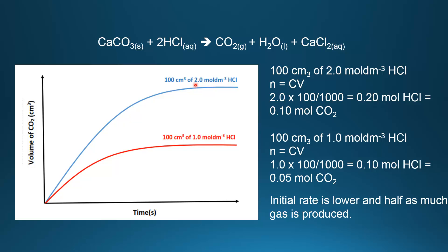Looking at the volume of gas produced, the blue curve produces about twice as much gas as the red curve. The reason is the number of moles. For the blue curve I get 0.10 moles of CO2, and for the red curve half as many moles, meaning half as much volume. So for this graph, the initial rate is lower due to the lower concentration, and half as much gas is produced because there are half as many moles.